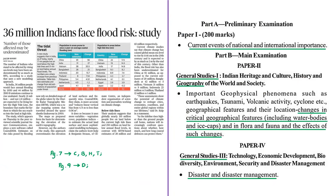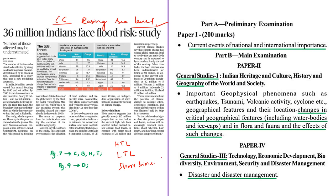The next news article is about new estimates on the number of people who could be affected by climate change and rising sea levels, based on a report in a scientific journal. We will discuss terminologies like high tide line, low tide line and the definition of shoreline for better understanding.